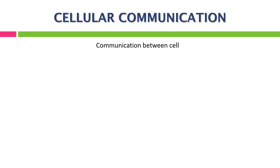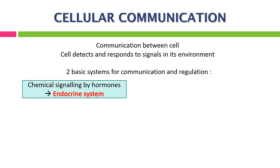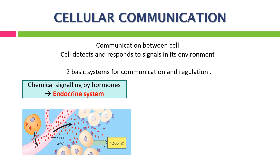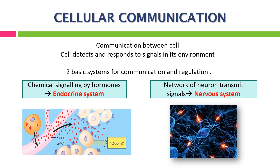Cellular communication is a communication between cells. Just like us, cells do communicate. They can detect what's going on around them, respond to their neighbors, to their environment, and send back messages. There are two basic systems for communications and regulation. The first is chemical signaling by hormone, which is the function of the endocrine system. The other major communication and control system is the network of neurons that transmits signals, which is the function of the nervous system.